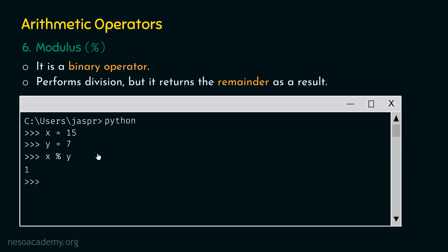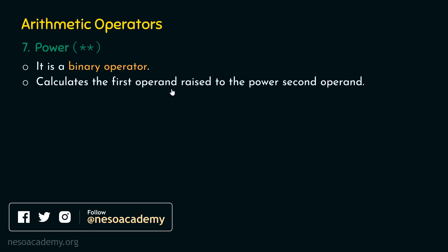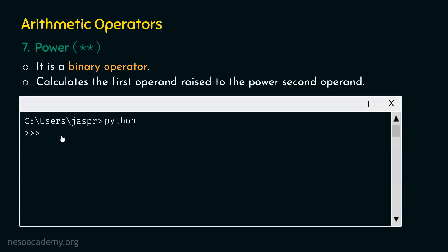Let's move on to the last operator: the power operator, denoted by two stars. It is also a binary operator and calculates the first operand raised to the power of the second operand. For example, with x equal to ten and y equal to two, x double-star y computes ten to the power two. After hitting enter, we get one hundred as a result.